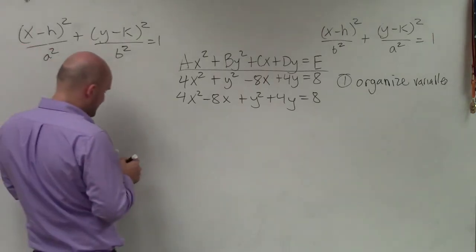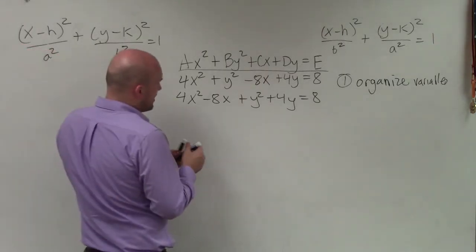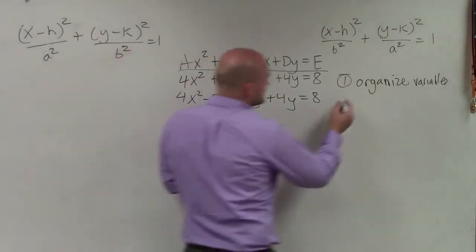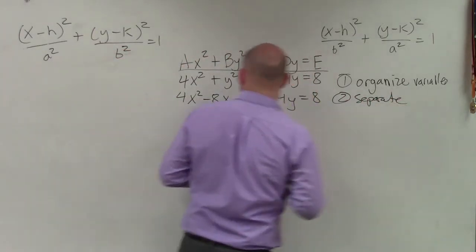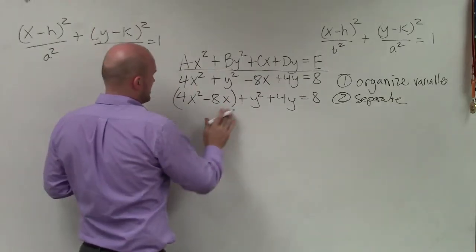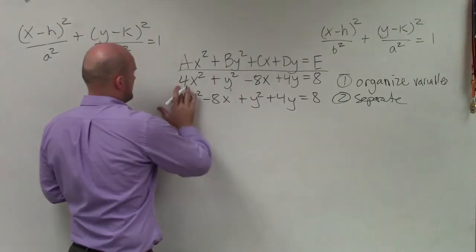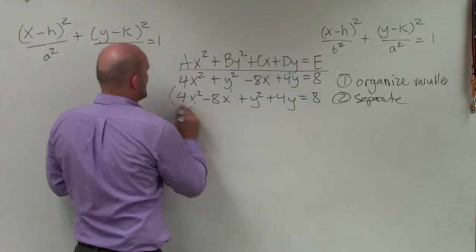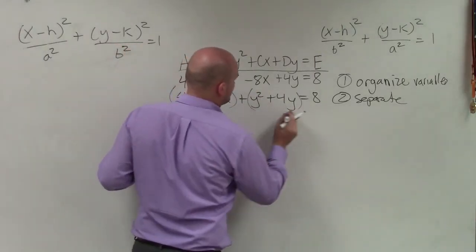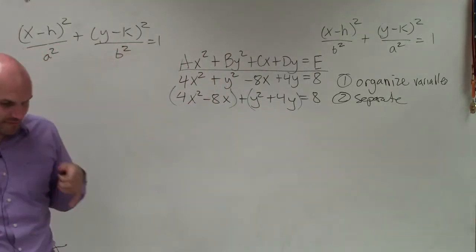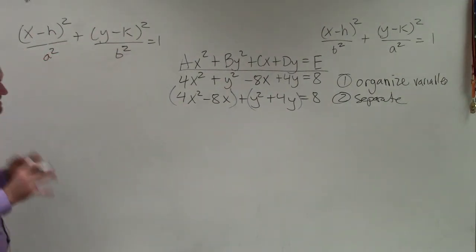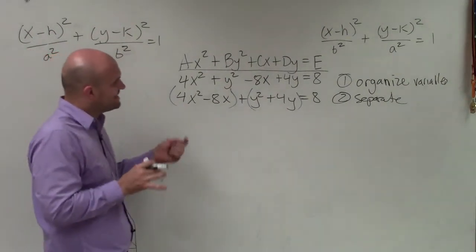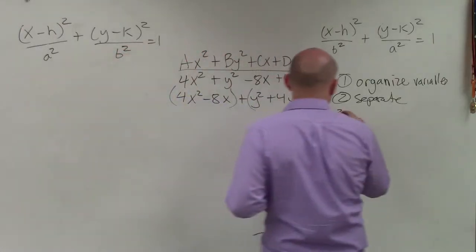Now basically, what I have here is now I'm going to want to separate. So I'm going to separate these. Now, that's still a positive, but I'm just going to separate them because I have my addition for my ellipse and basically what I'm going to do now is I'm going to complete the square for each variable.